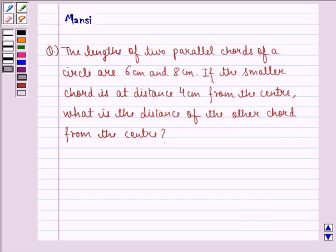Hello and welcome to the session. My name is Mansi and I am going to help you with the following question. The lengths of two parallel chords of a circle are 6 cm and 8 cm. If the smaller chord is at distance 4 cm from the center, what is the distance of the other chord from the center?